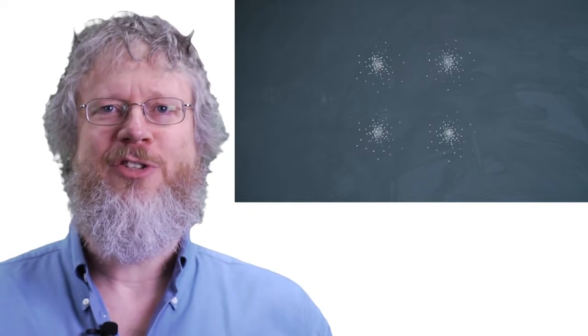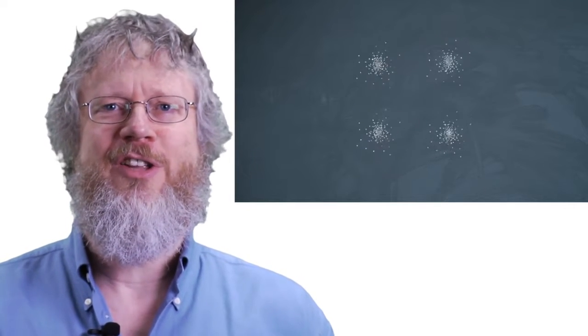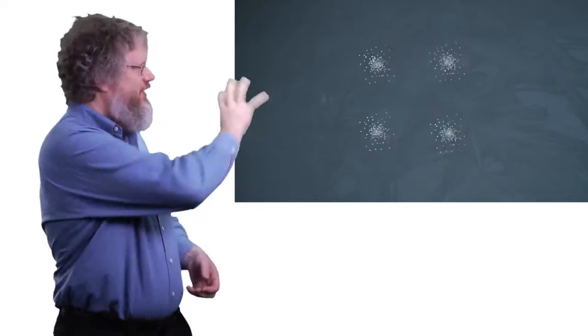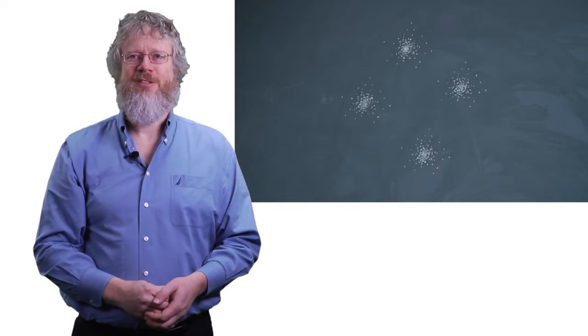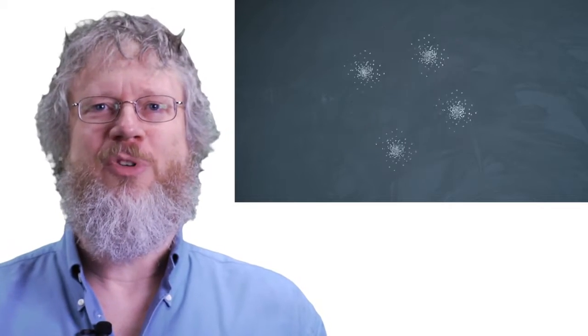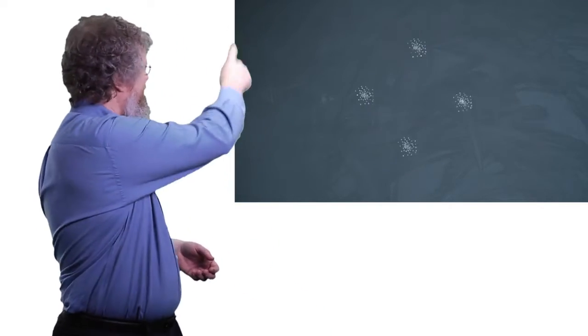Phase noise makes them jitter, and the frequency difference makes them rotate. In order to distinguish these symbols at a receiver, we need to draw a coordinate system like this.